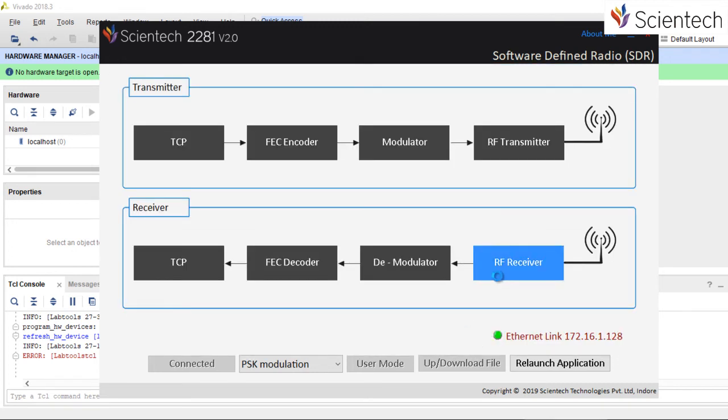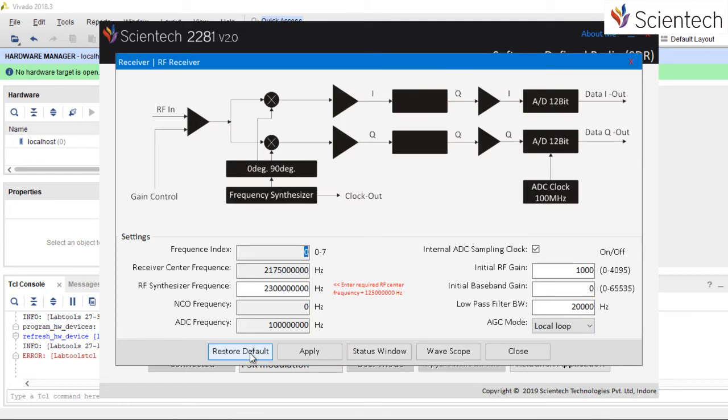Similarly, users can also set the necessary parameters in receiver and RF down converter.